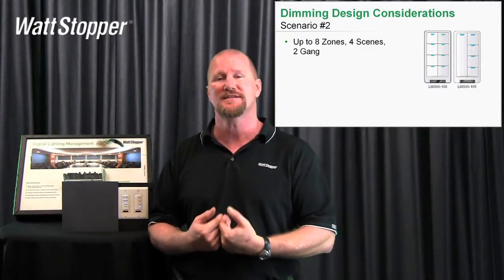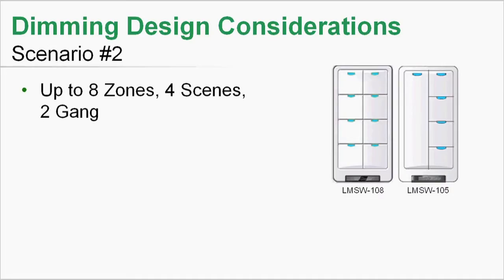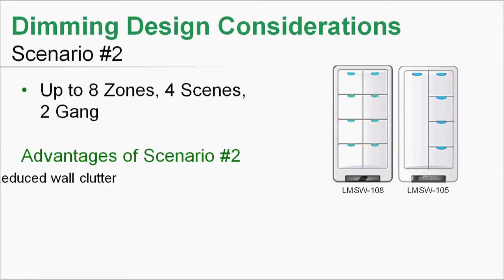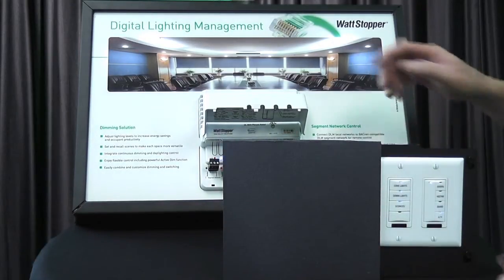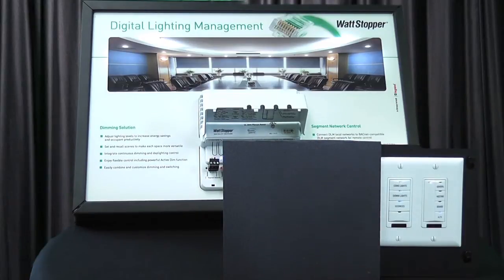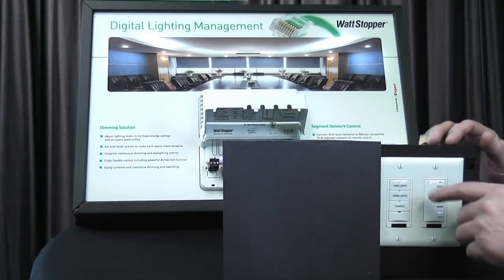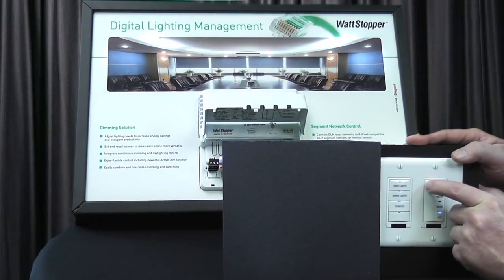How do we set the scene and adjust light levels? We built a feature called Active Dim. It's a double tap action. If I double tap the top button for cove lights, the cove light LED and the rocker LED both blink for five seconds — extended by two seconds each time I use the rocker. During that blinking, the rocker controls just the cove lights. So I double tap and ramp them up, and only the cove lights raise.